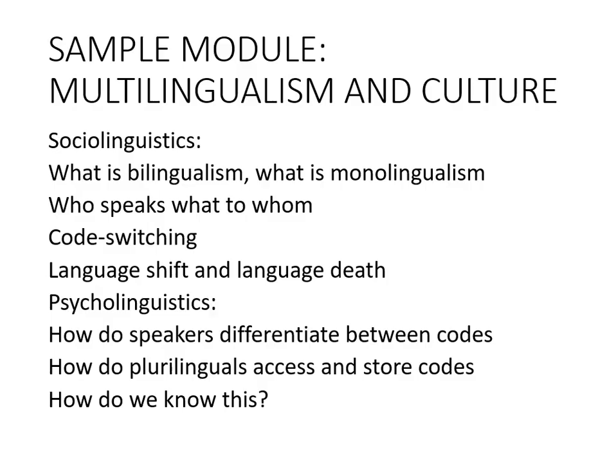In multilingualism and culture, we look at what bilingualism is and we examine lay notions of bilingualism — for example the idea that we speak two languages with equal fluency — and we problematise those. We talk about real multilingual communities around the globe and how they actually use their languages. We look at the issues of who speaks what to whom, what might make me choose one language over another, what might make me change language mid-utterance, whether there are rules governing when I can change, and what might make speakers shift away from their normal language and start adopting another — possibly causing the death of a language in the end.